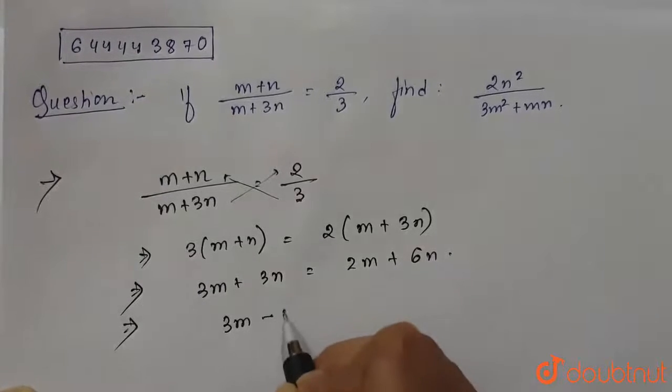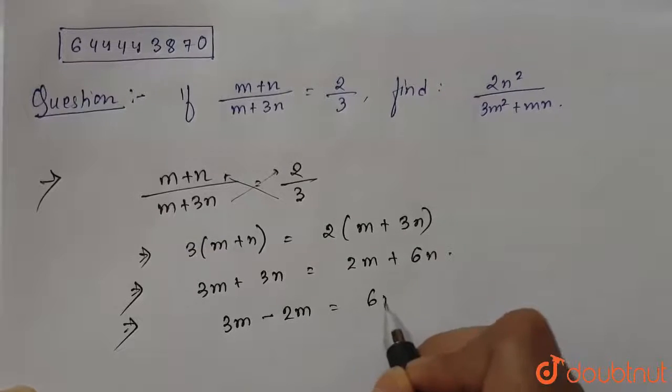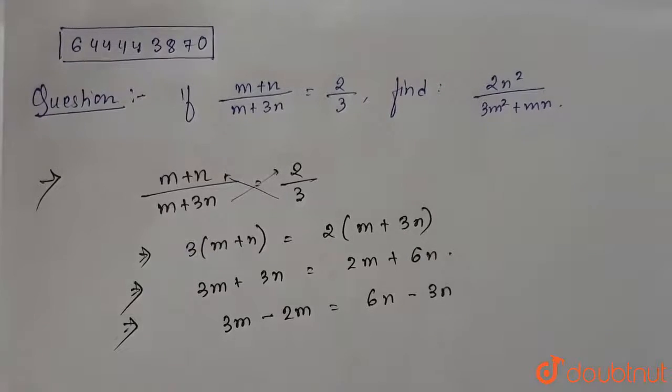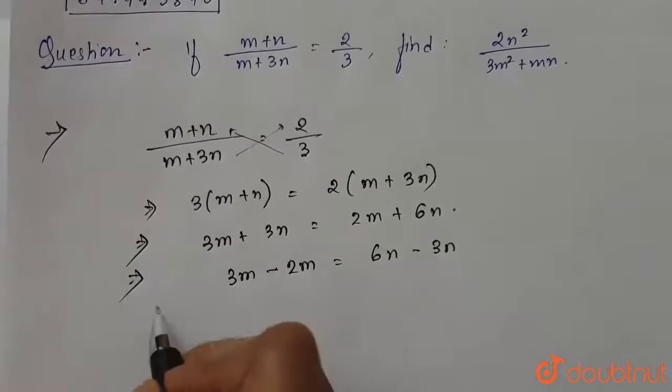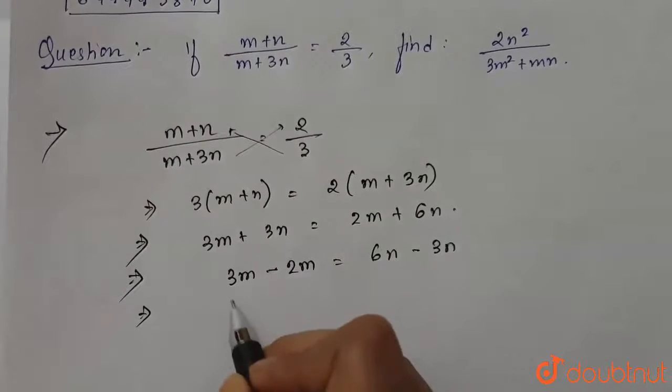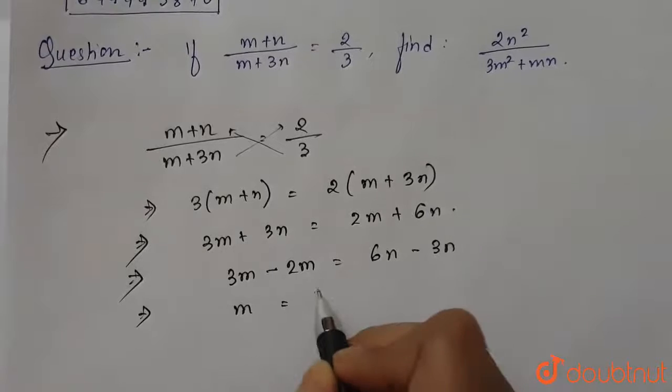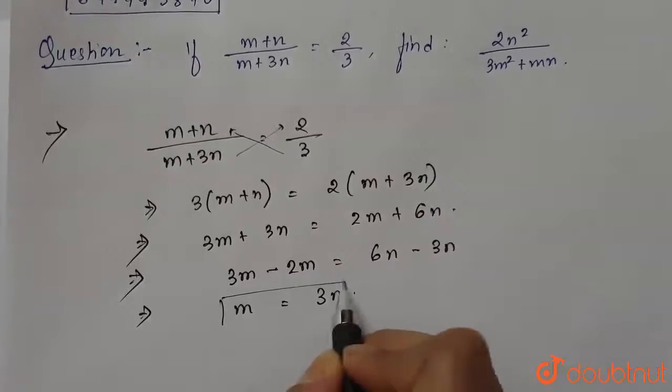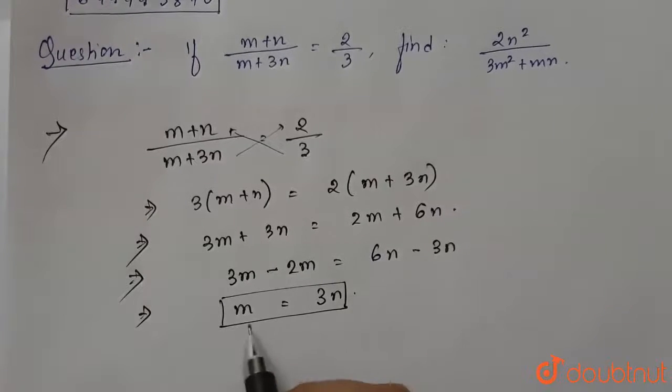From here we can write 3 minus 2 is 1, so m equals 6 minus 3 is 3n. So we have found out the value of m in terms of n.